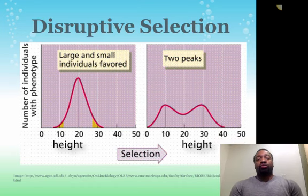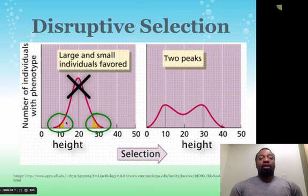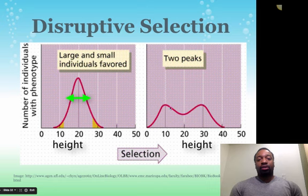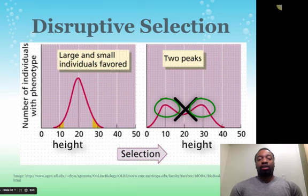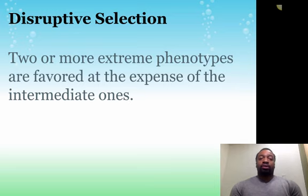This is what we call disruptive selection. Robots above the height of the hovercraft predator will be favored, and robots below that height will also be favored. The robots at the same height as the predator will be hypnotized and die, while the tallest and shortest robots — outside the predator's range — will survive and reproduce more. The curve splits: the low extreme is favored, the high extreme is favored, and the intermediate phenotype is at a disadvantage.